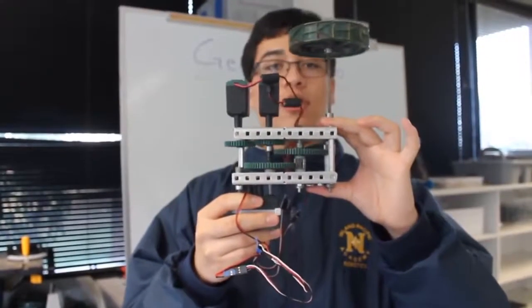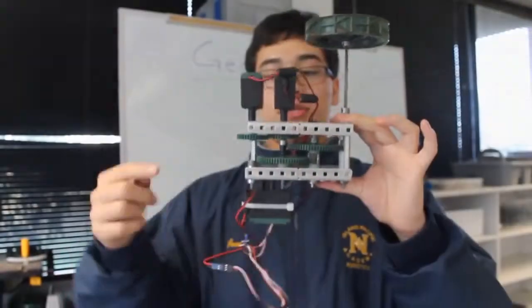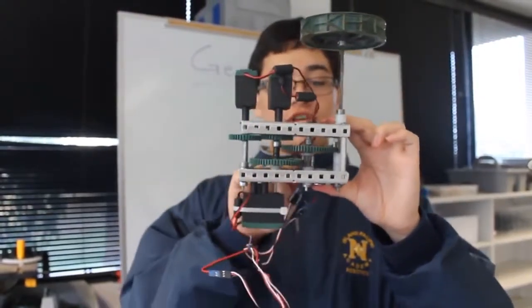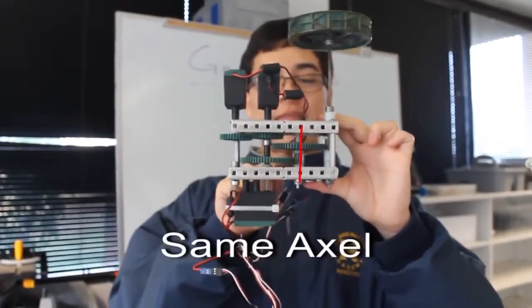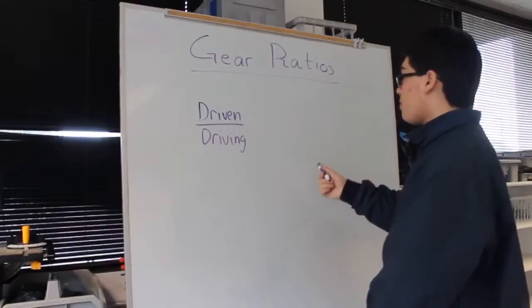This is a compound gear ratio. What that means is that it is a combination of two different gear ratios. This is the first gear ratio, this is the second gear ratio. And the driven gear of the first gear ratio is on the same axle as the driving gear on the second gear ratio.